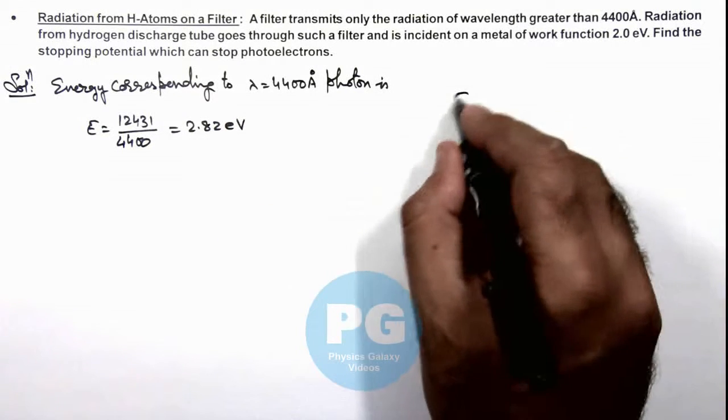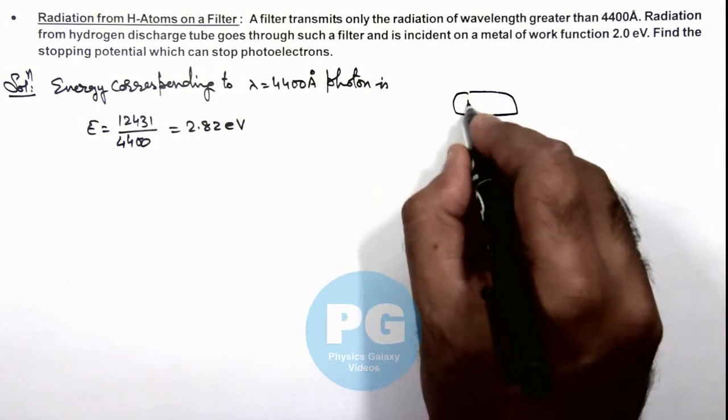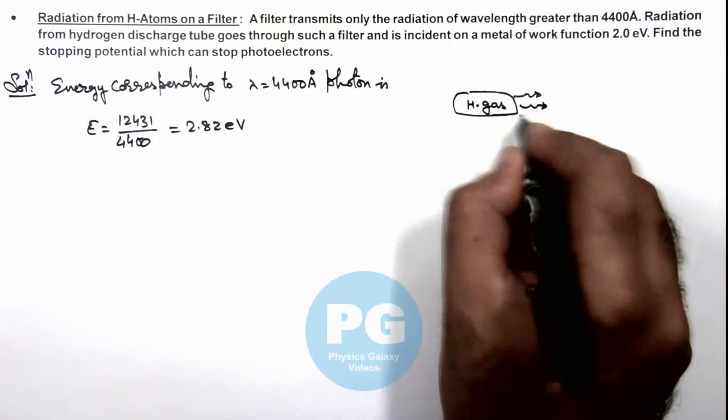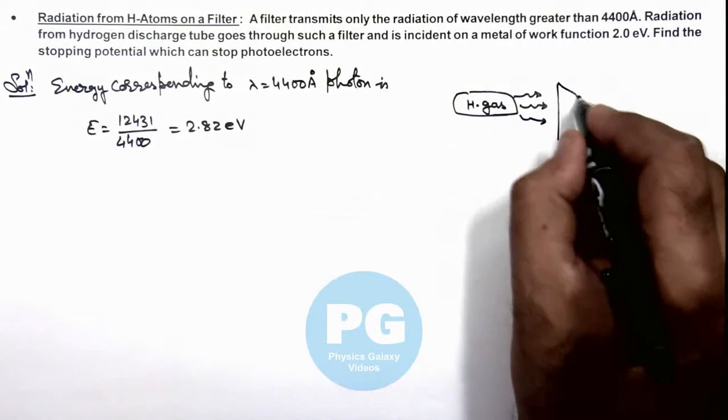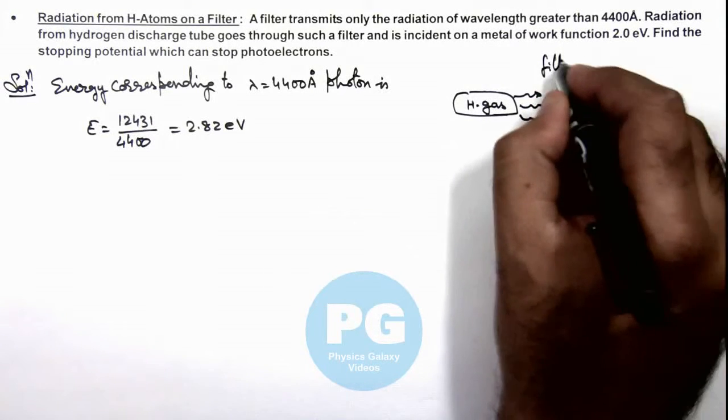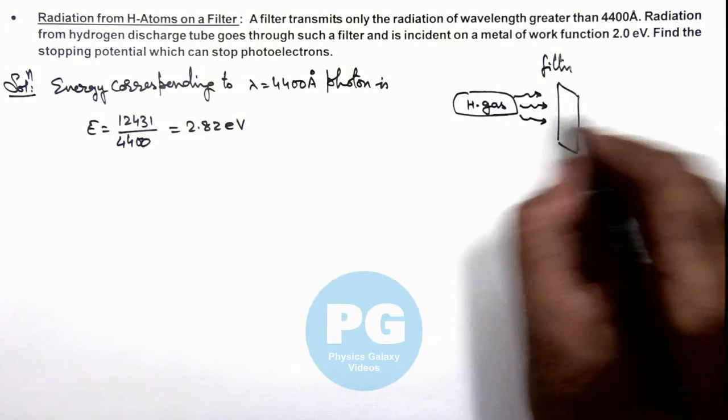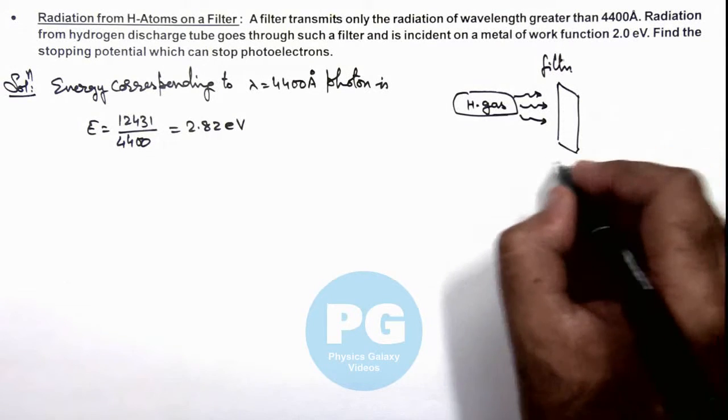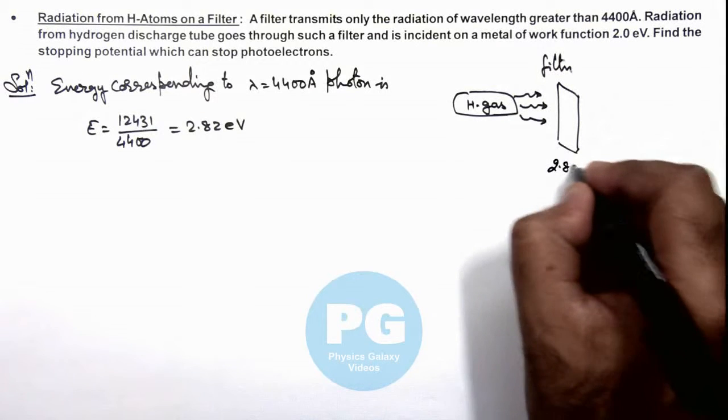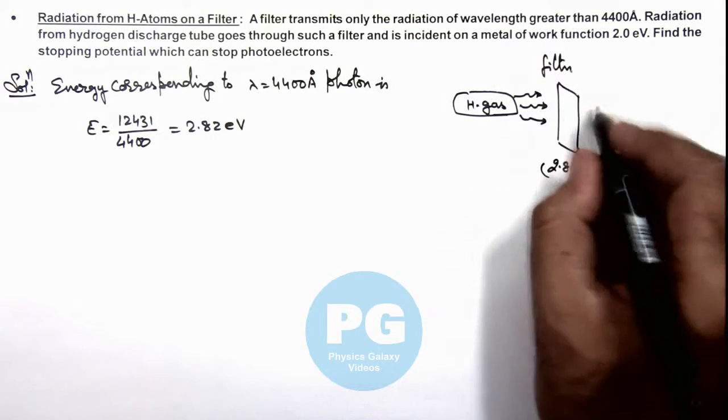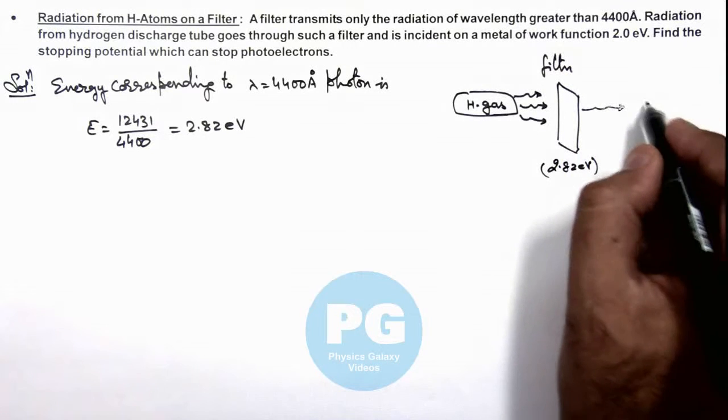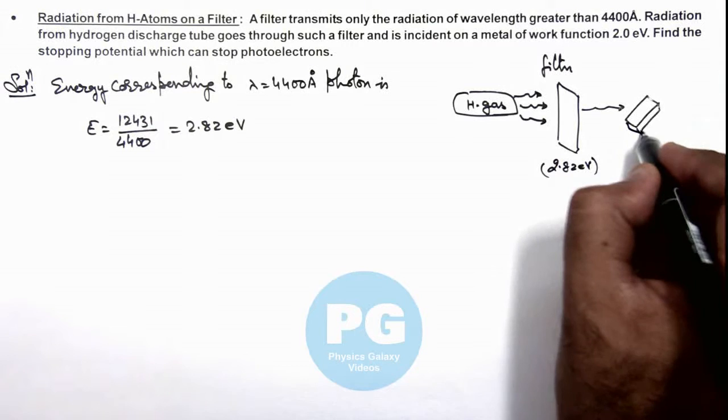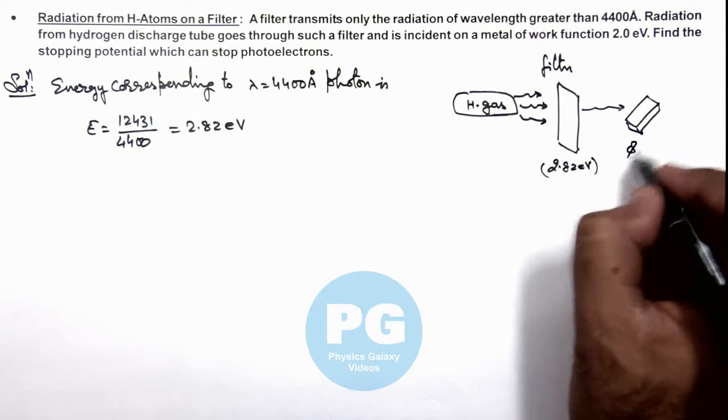That means if in a discharge tube hydrogen gas is taken, and radiation emitted from hydrogen gas falls on a filter—say this is the filter—and on the other side the radiations which are less than 2.82 electron volts incident onto it will come out of it and fall on a metal plate.